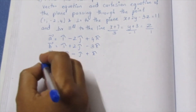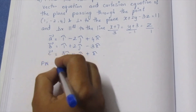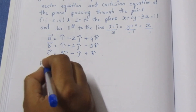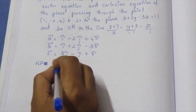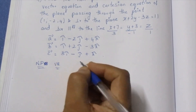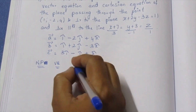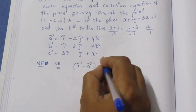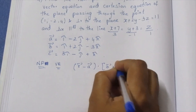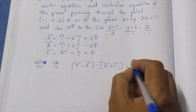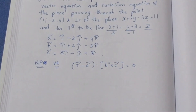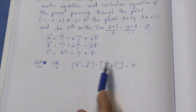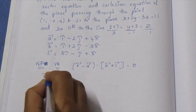The non-parametric form of the vector equation formula is: (r-vector minus a-vector) dot (b-vector cross c-vector) equals zero. We know r-vector, A, B, C, and we can compute the cross product b-vector cross c-vector.